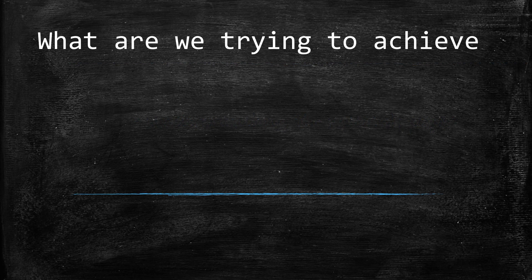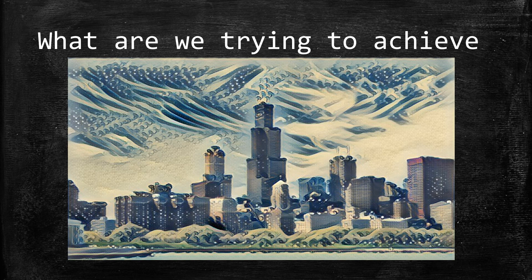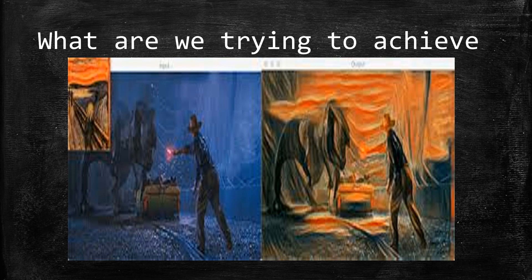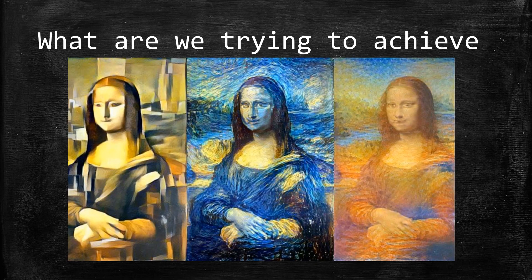Let me show you a few example images generated using neural style transfer. In the first example, there was an original image of buildings combined with a painting of waves to produce a stunning result. The next example is lower resolution, but you can see the content image on the left, the style image on the top left, and the result on the right, which is quite amazing. We also see different styles applied to a picture of the Mona Lisa.